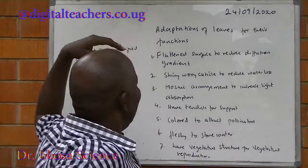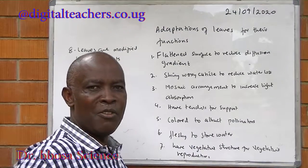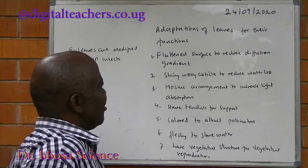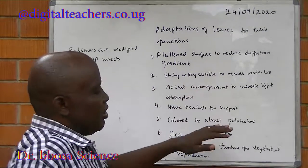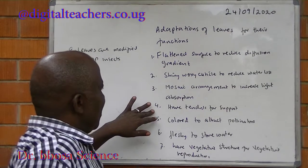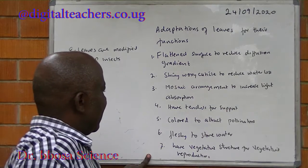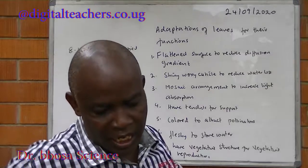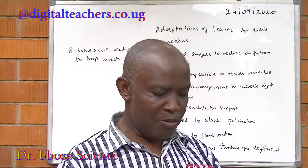Adaptations of leaves to their other functions, which is different from adaptations for photosynthesis because leaves have many different functions. For photosynthesis: the flat thin surface reduces diffusion distance; waxy cuticle reduces water loss; mosaic arrangement increases light absorption. Other adaptations include: may have tendrils for support, which is not for photosynthesis; colored to attract pollinators; fleshy to store water; have vegetative structures for vegetative reproduction; some leaves are modified to trap insects.